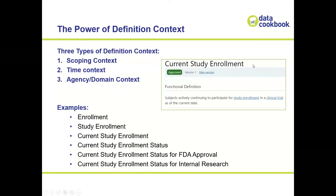Here's an example using three types of context: 'current study enrollment' — a pharmaceutical definition. 'Subjects actively continuing to participate in study enrollment in a clinical trial as at the current date.' You can see the progression: enrollment, study enrollment, current study enrollment, current study enrollment status, current study enrollment status for FDA approval. These are all definitions we recommend you consider when context creates confusion or collision — allowing you to use context in naming and creating more specific definitions, and then linking back to the more general or other scoping definitions to connect them.